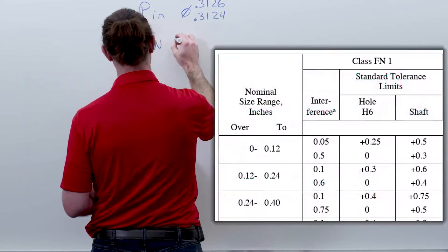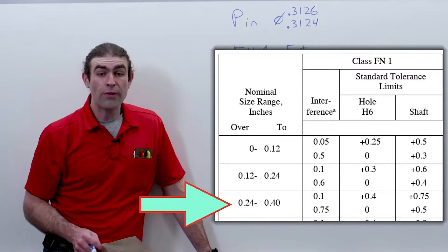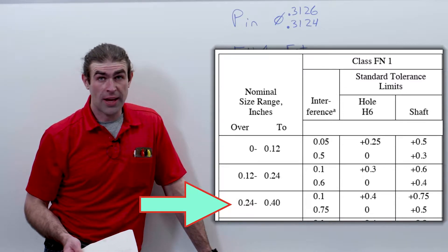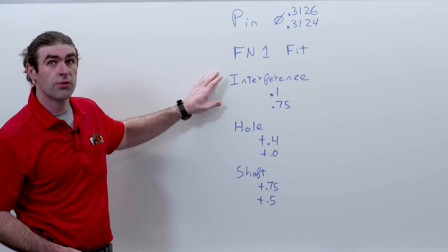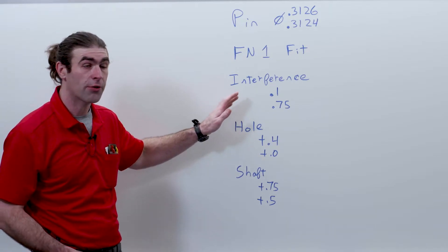I'll put a graphic up here, and I'll write down the relevant information that we need for this calculation. So if you look up the values on Machinery's Handbook, we're going to get an interference ranging from one-tenth of a thousandth to seven-and-a-half-tenths of a thousandth.